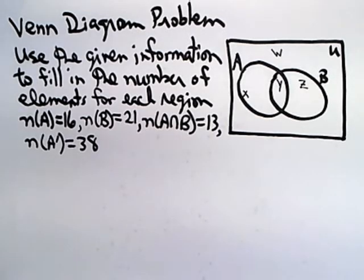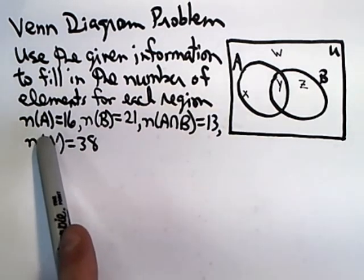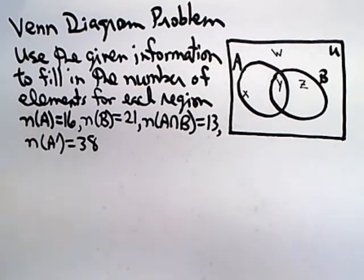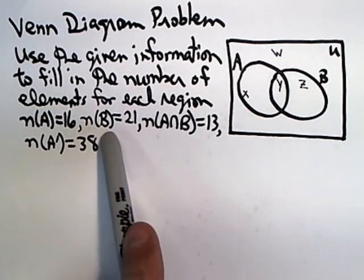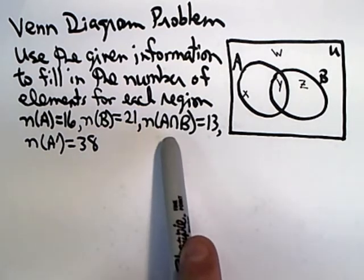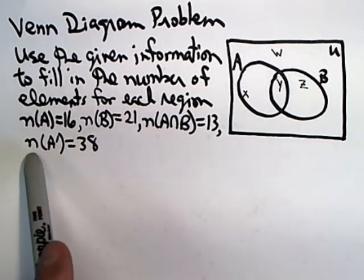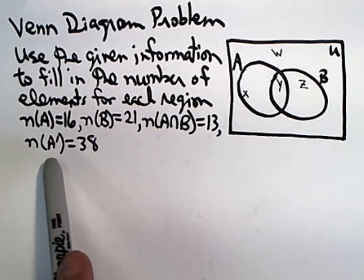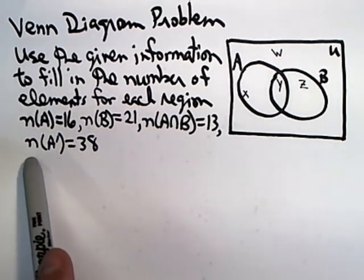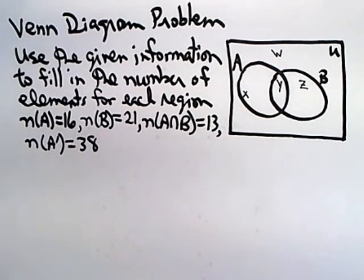Here we're asked to use the given information to fill in the number of elements for each region in this Venn diagram to the right. The information we're given is that the number of elements in set A is 16, the total number of elements in set B is 21, the number of elements in the intersection of A and B is 13, and the number of elements in A complement—in other words, the number of elements not inside of set A—is 38.